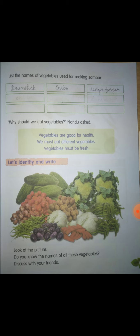Let's identify and write. Look at the picture — they have given more vegetables here. Do you know the names of all these vegetables? I will tell one or two, and the remaining you should find. The purple color vegetable — what is it? Brinjal. B-R-I-N-J-A-L. Brinjal.